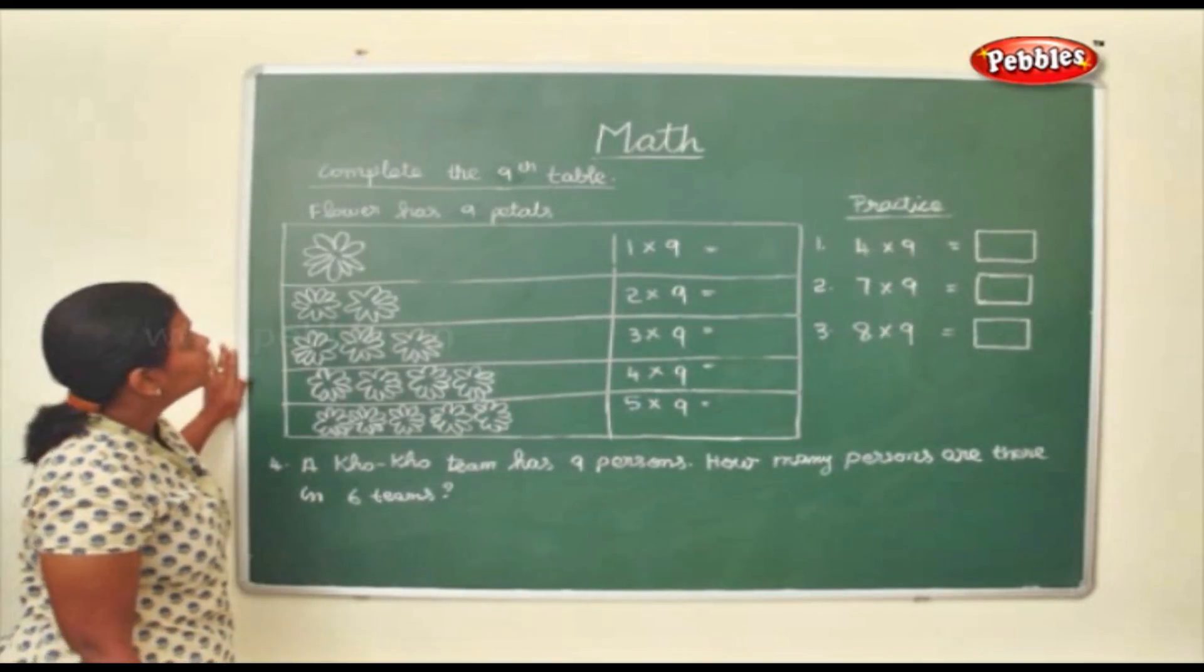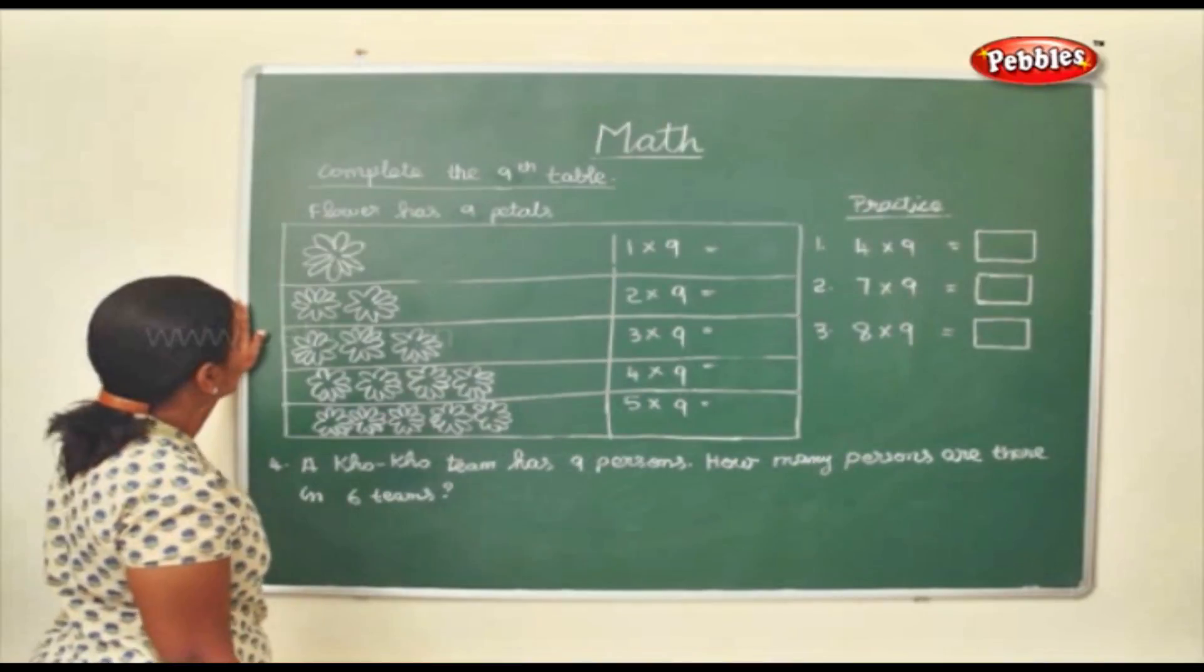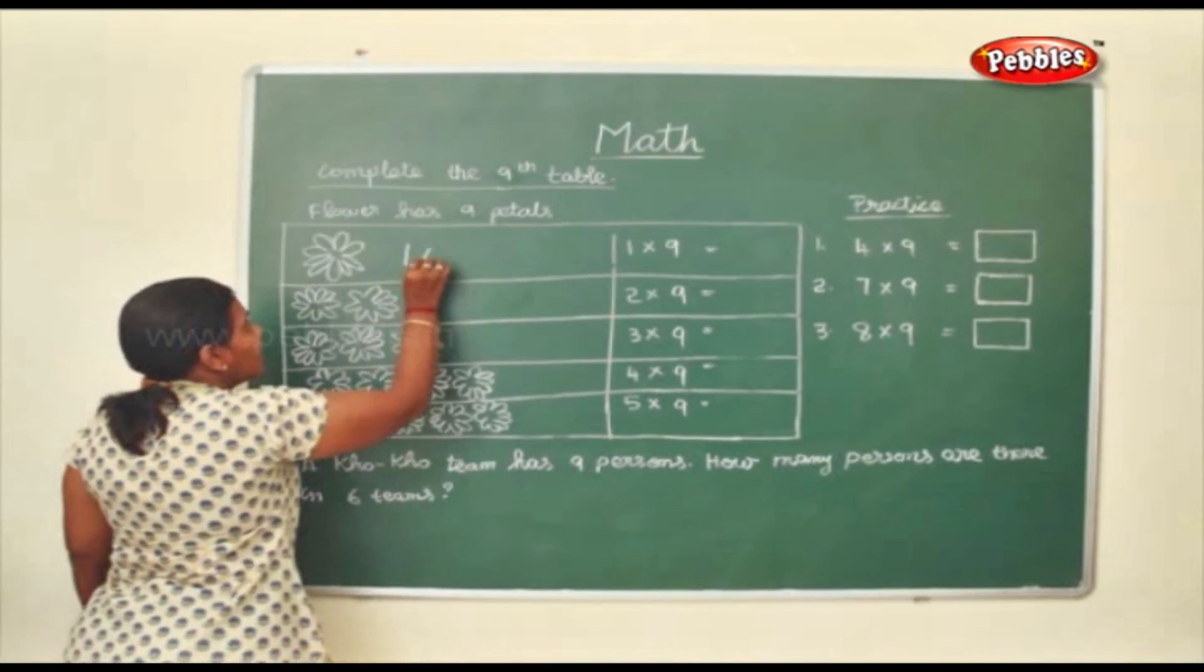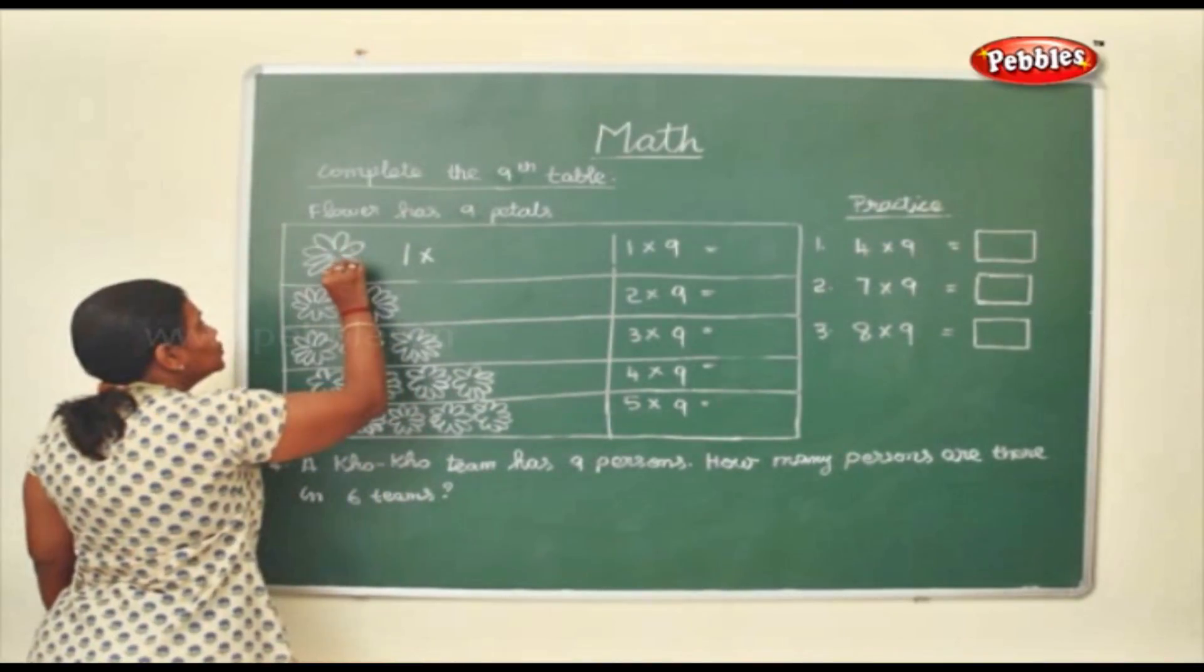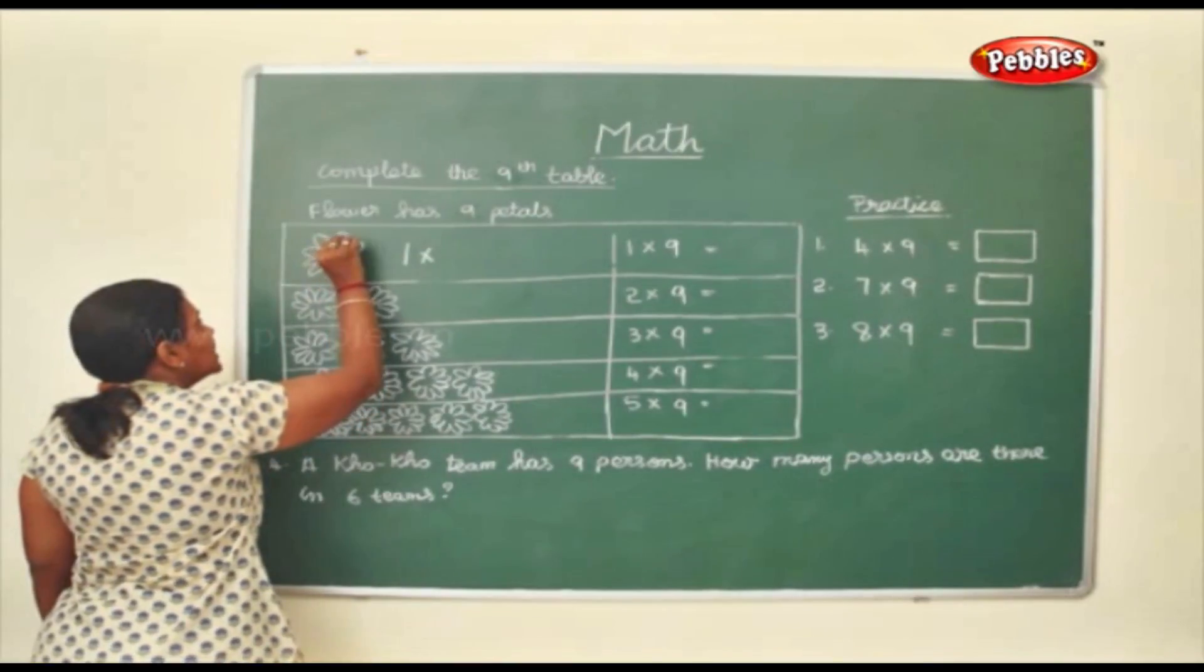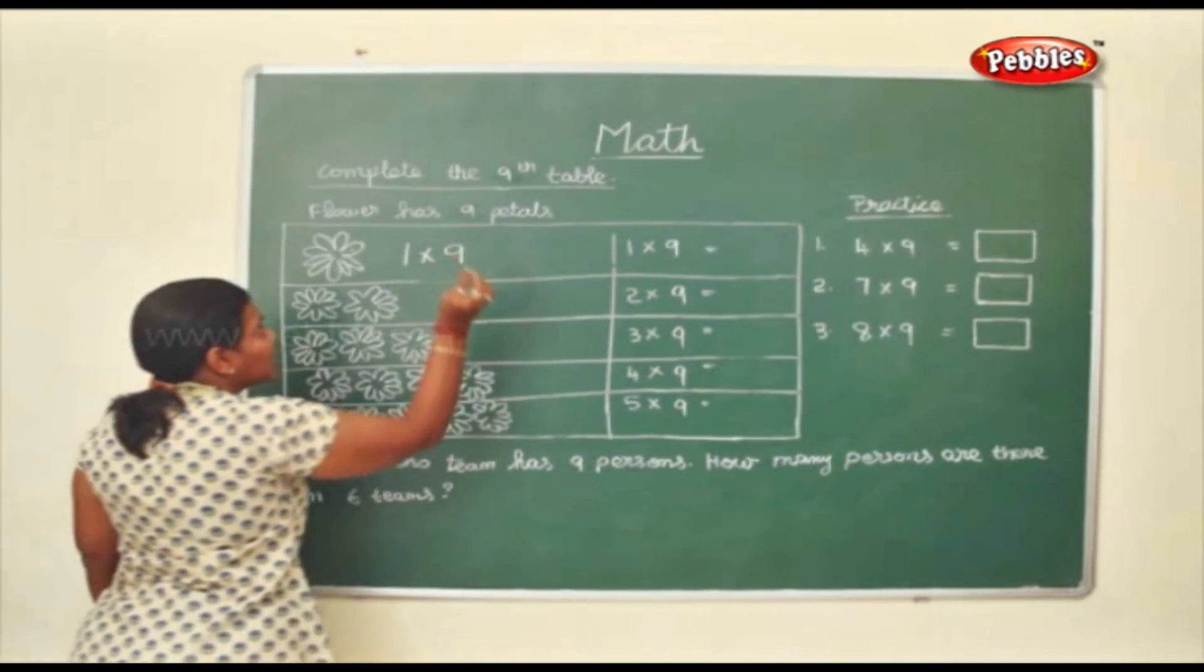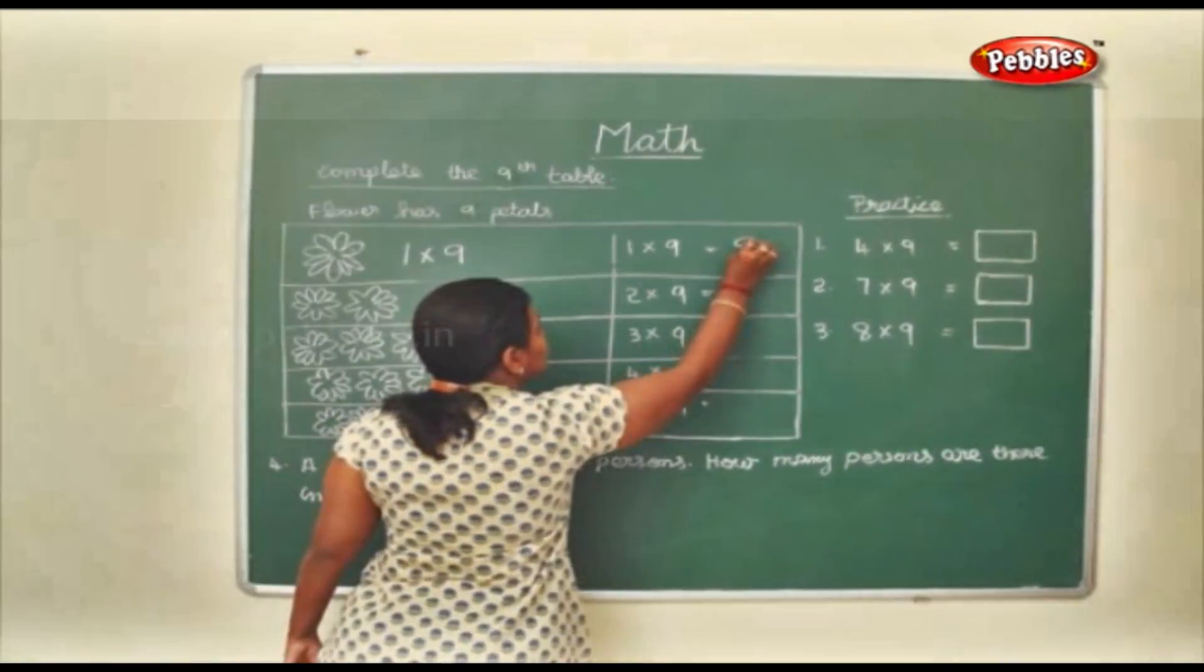Now complete the 9th table as we did earlier. Flower has 9 petals. So 1 flower has 9 petals. 1, 2, 3, 4, 5, 6, 7, 8, 9. So 1 flower has 9 petals. So 1 to 9 is 9.